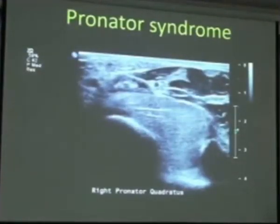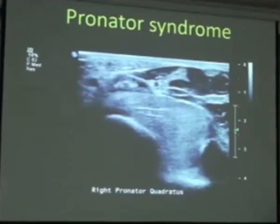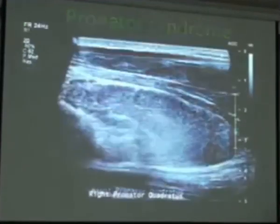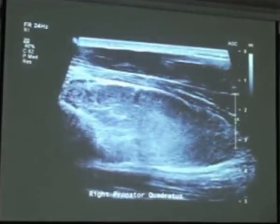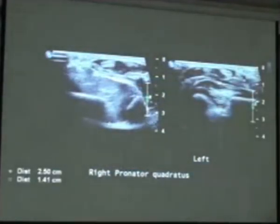Another condition seen on the volar aspect of the wrist is pronator syndrome. This gentleman presented with pain on the volar aspect of his right wrist after playing motor guitar. There is quite a bit of thickening of the pronator quadratus muscle between the radius and ulna. Using that comparative dual-imaging view, there's quite a bit of thickness difference between the right and left sides.